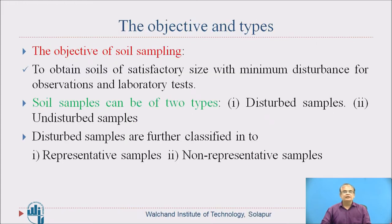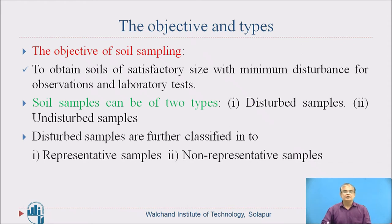What are the objectives of soil sampling? The objectives are to obtain soils of satisfactory size with minimum disturbance for observations and laboratory tests. Remember, minimum disturbance — when you collect a sample, the soil should receive minimum disturbance.